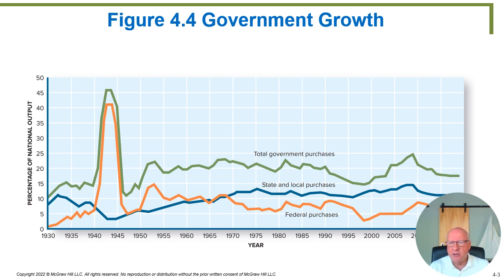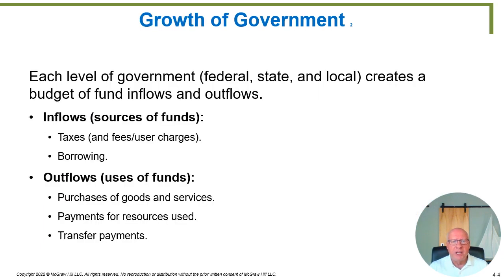Remember, these figures only cover government purchases — actually hiring workers and purchasing equipment to operate a government — and do not count transfer payments. Each level of government — federal, state, and local — creates a budget of funds inflow and outflow. The inflow is the source of funds: where does the government get its money? From two main sources: either taxes or borrowing.